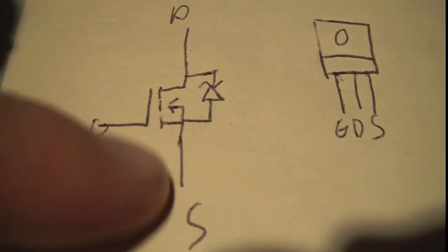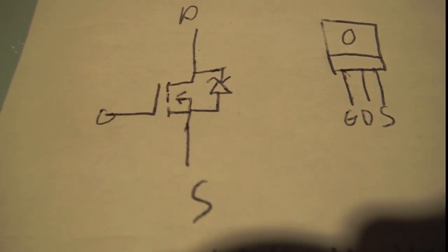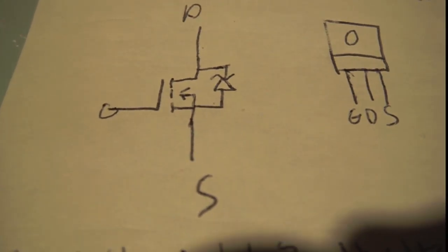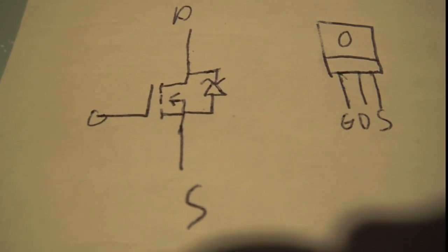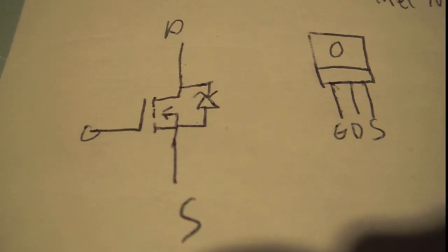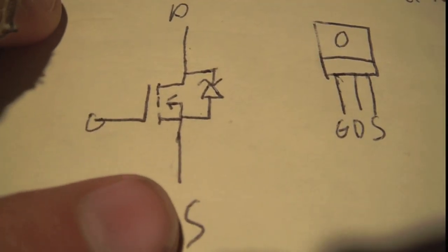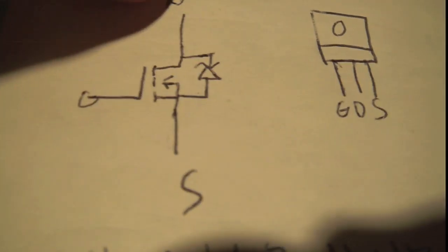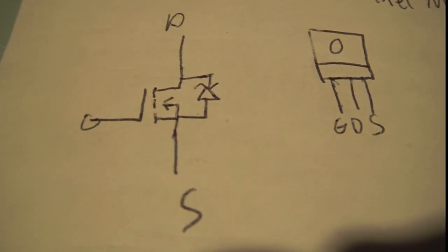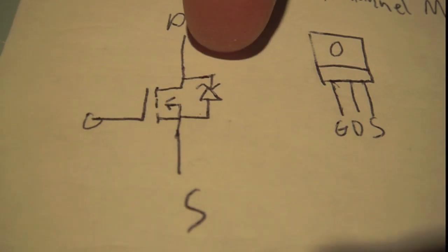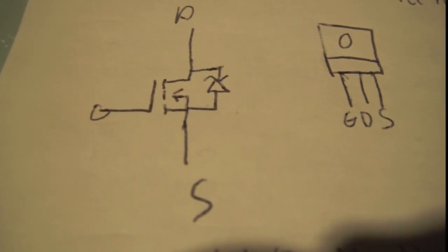This may be confusing initially, because you think the drain should be where current drains out of. A good way to remember this is that current flow actually goes from negative to positive, so the source pin is negative and current drains into the drain pin — that's conventional current.